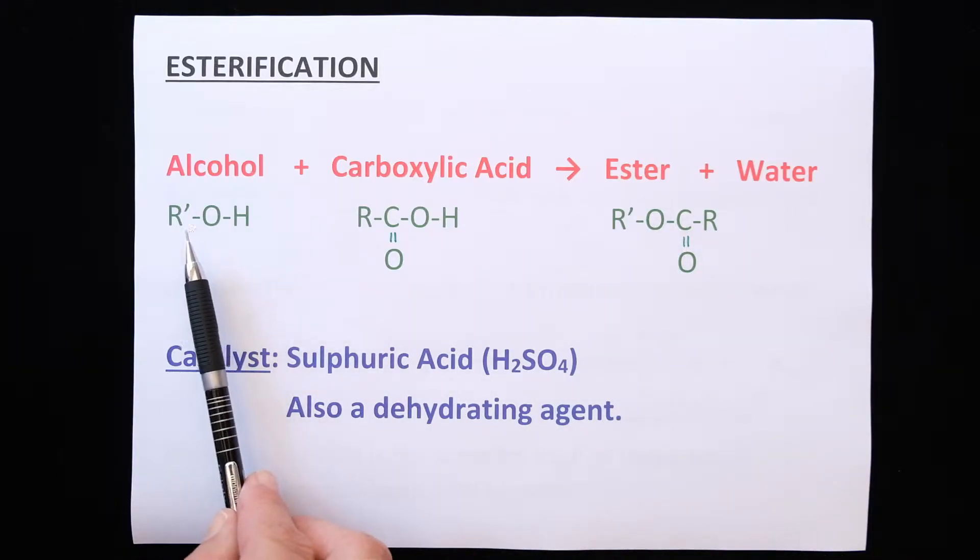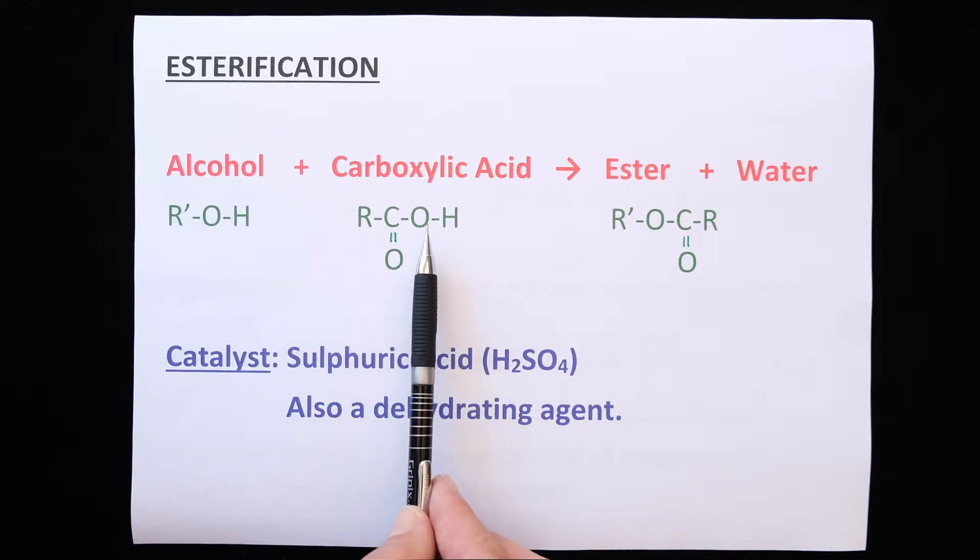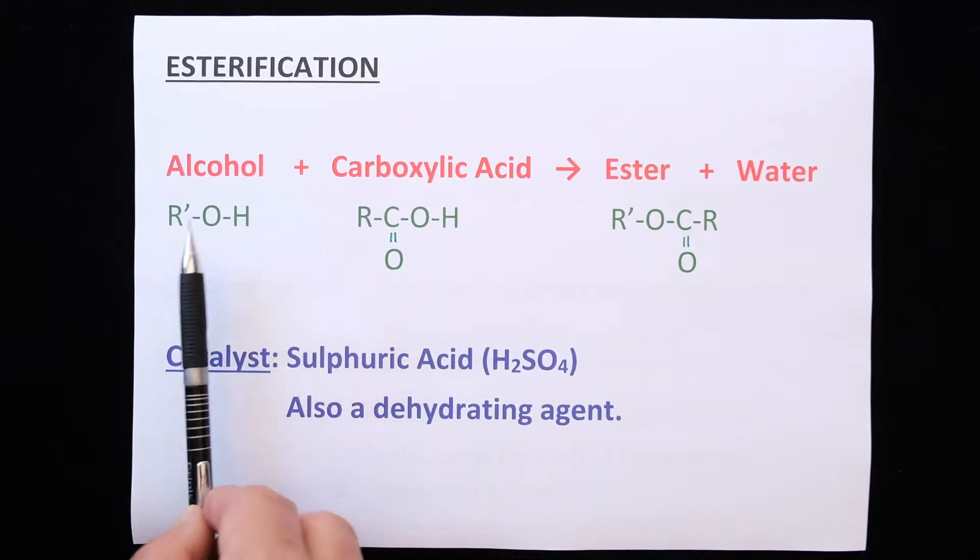Here I've given the alkyl group which could represent a carbon or any number of carbons with a hydroxyl, the alcohol. And the carboxylic acid has a carboxyl group attached to an alkyl group. The R's represent any number of carbon atoms in a chain.